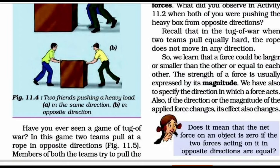Remember that in tug of war, when two teams pull equally hard, the rope does not move in any direction. So we learned that a force could be larger or smaller than the other, or equal to each other. The strength of a force is usually expressed by its magnitude. We also have to specify the direction in which a force acts. If the direction or the magnitude of the applied force changes, its effect also changes.